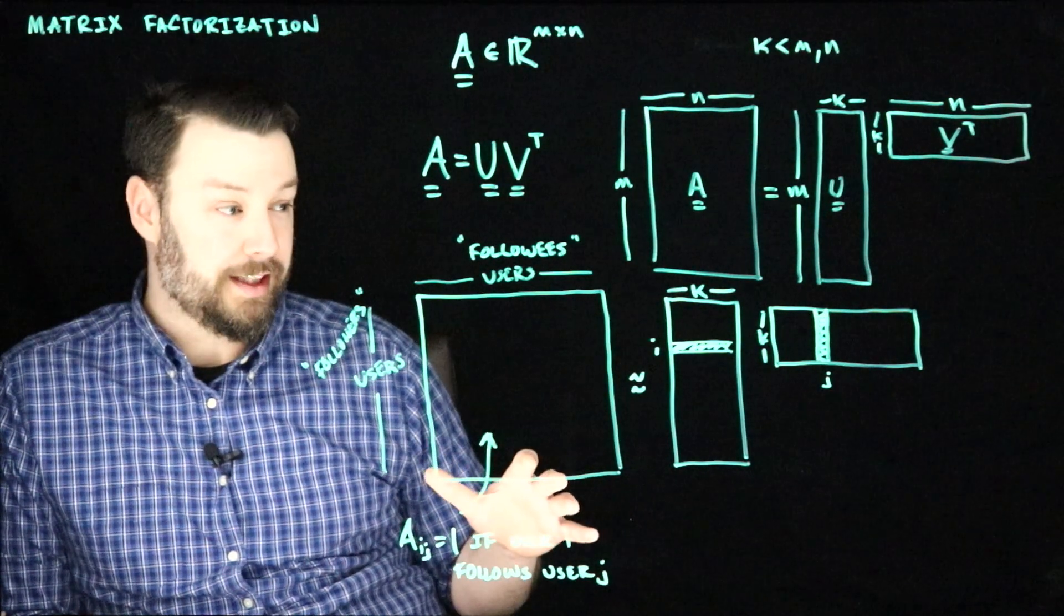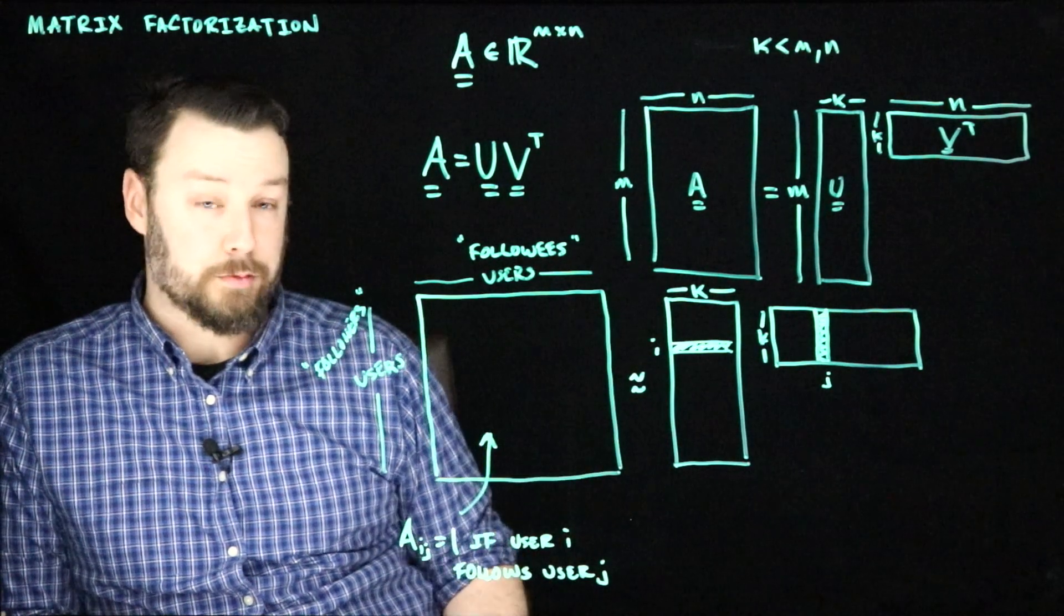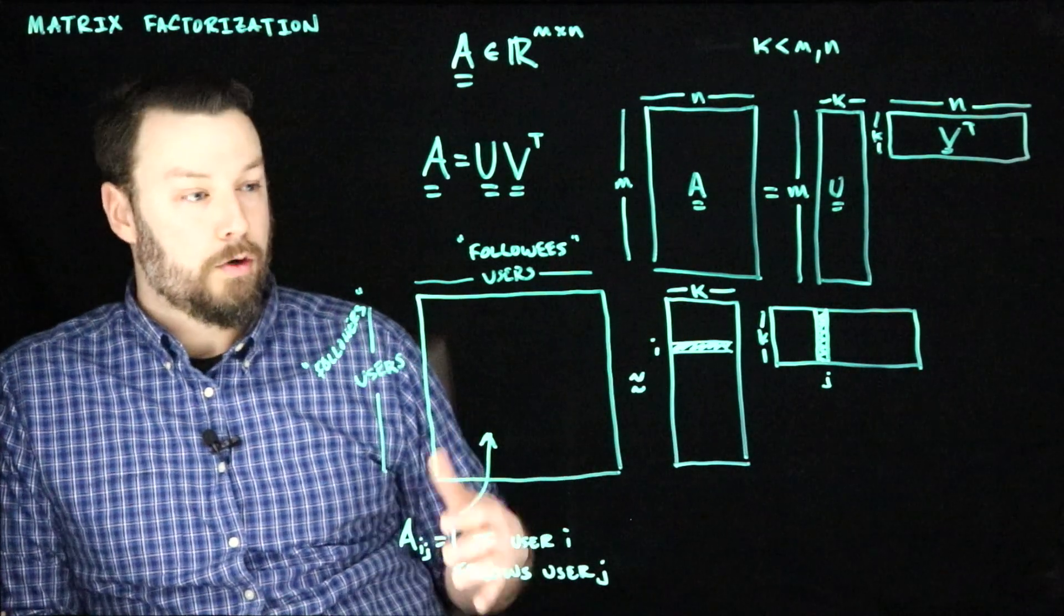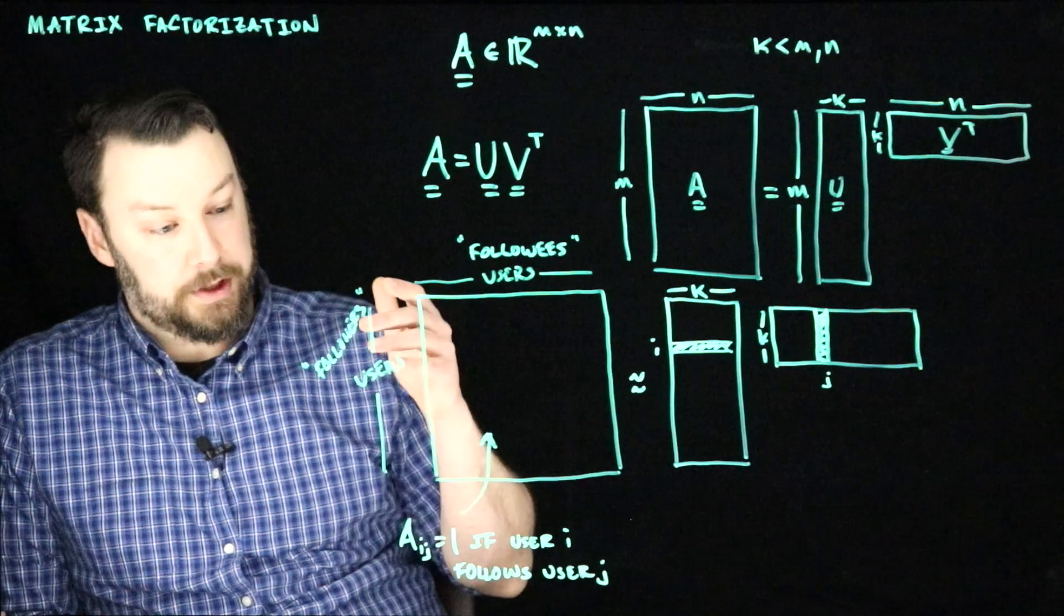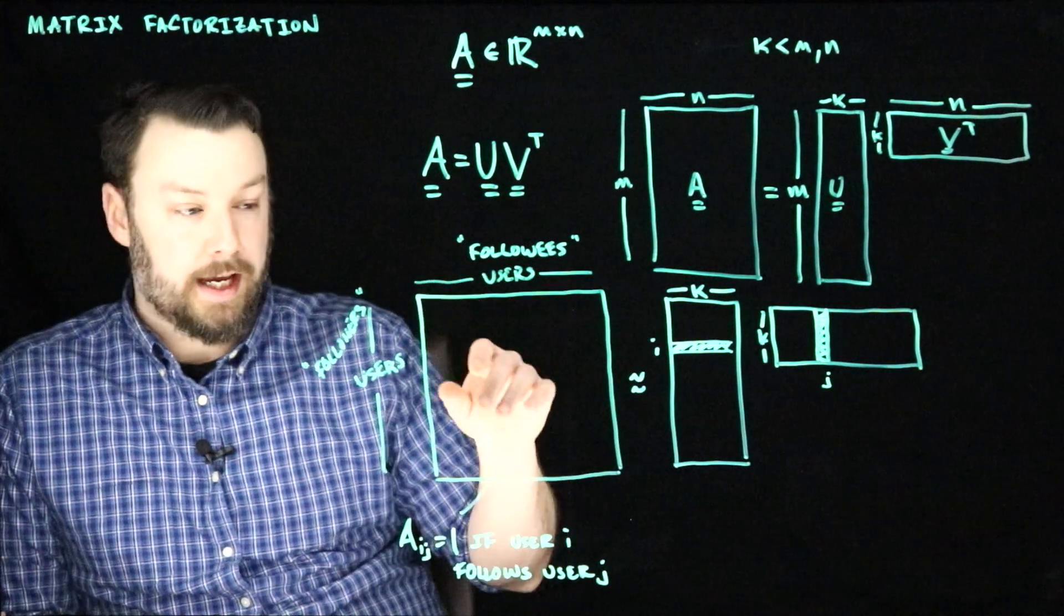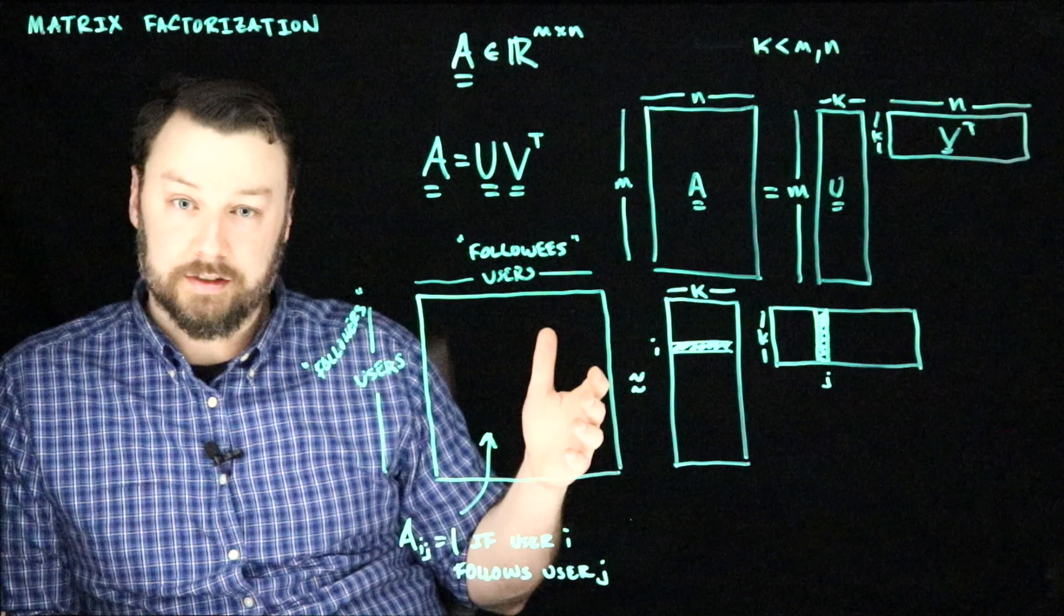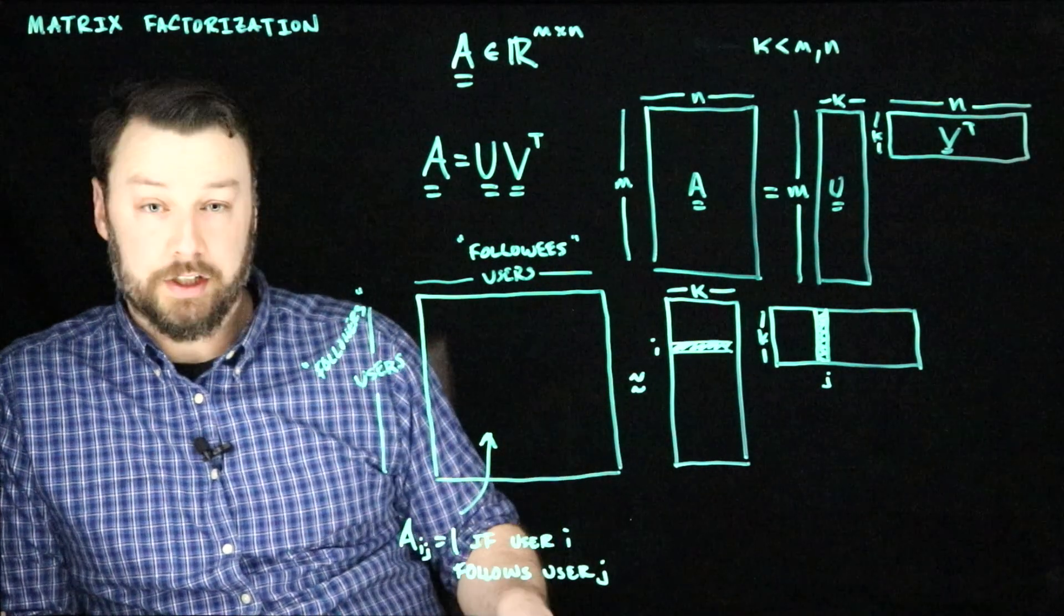So a very common thing. And one of the ways that people got started thinking about this was, for example, the Netflix problem, where again, you can imagine that instead of users by users or documents by vocabulary, it would be users by movies, where the entries are the possible ratings that someone might assign to that movie. Then when we discover this factorization...